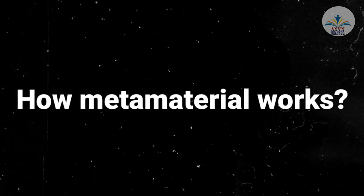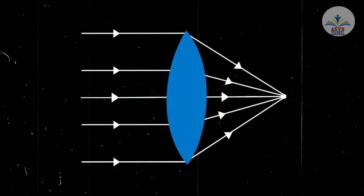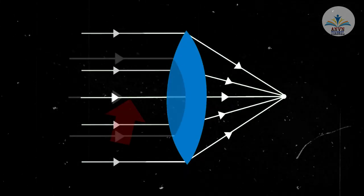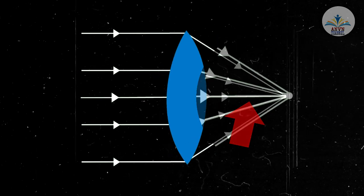How metamaterial works? For instance, let's imagine a convex lens. When light rays reach it, in the middle portion as you can see is the same as before hitting onto the convex lens.